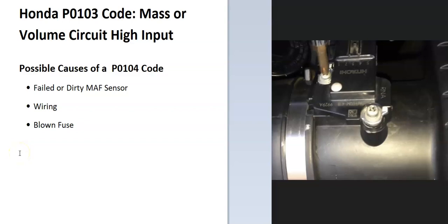Today I'm talking about a Honda with the P0103 code — what it is and how you go about fixing it. A P0103 code is a mass or volume air flow circuit high input. The onboard computer needs to know how much air is going into the engine so it can get the air-fuel ratio mixture right, and to do this it uses a sensor called the mass airflow sensor, or MAF sensor.